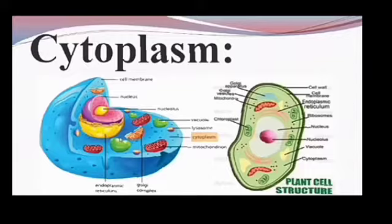What is cytoplasm? The region between nuclear membrane and cell membrane is called cytoplasm. It is also known as fluid part of the cell because it contains 90% of water.